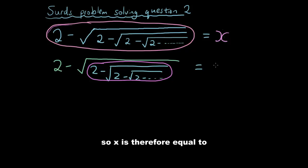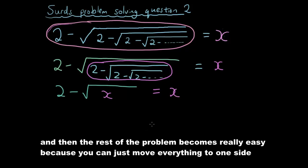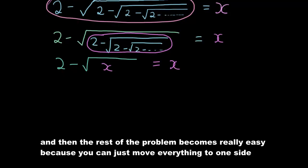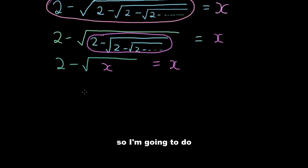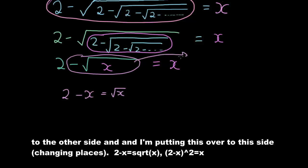So x is therefore equal to 2 minus square root of x. The rest of the problem becomes really easy because you can just move everything to one side. I'm going to do 2 minus x equals square root of x. I'm putting this to the other side and this over to this side, changing places. So I have 2 minus x equals square root of x.